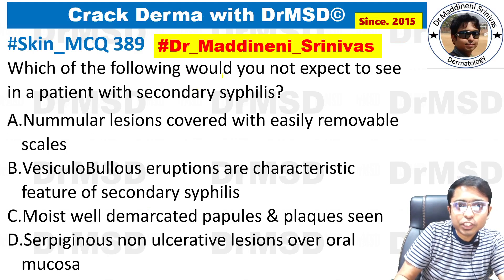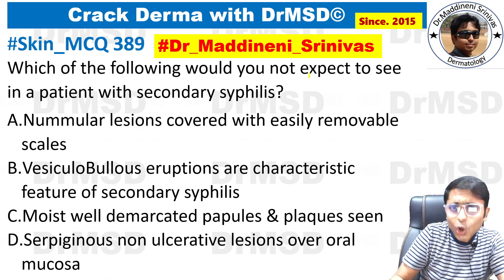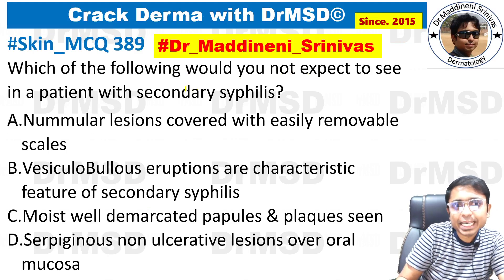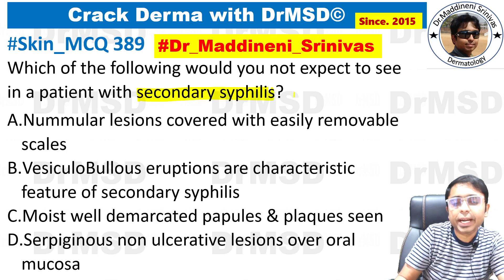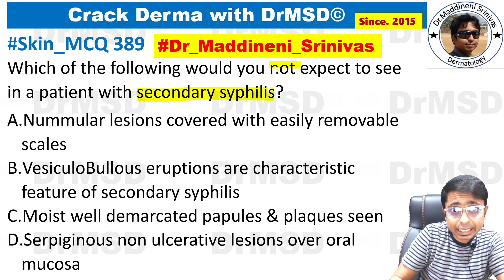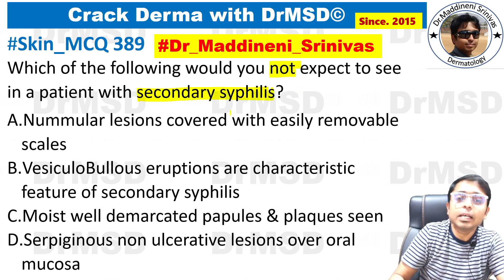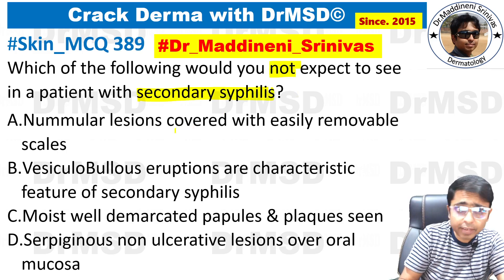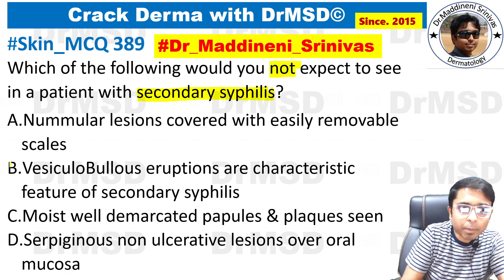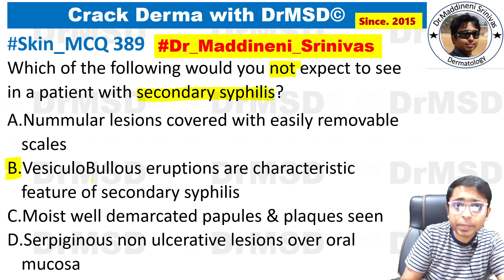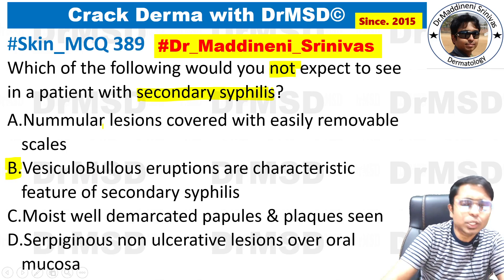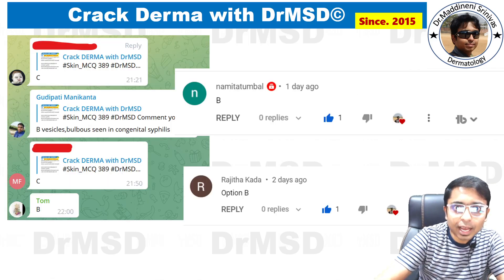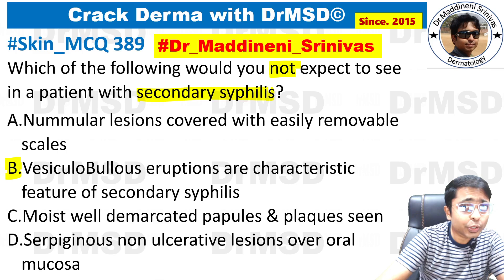The question asks: which of the following would you NOT expect to see in a patient of secondary syphilis? You have to identify what is not seen — read the question carefully. If you marked option B, you are absolutely right.